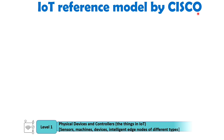The first layer, level one, is Physical Devices and Controllers, which are considered to be the 'things' in IoT. At this level, the focus is on the physical devices or things in the IoT ecosystem. It includes sensors, machines, devices and intelligent edge nodes of various types. These devices collect data, monitor the environment and interact with the physical world.